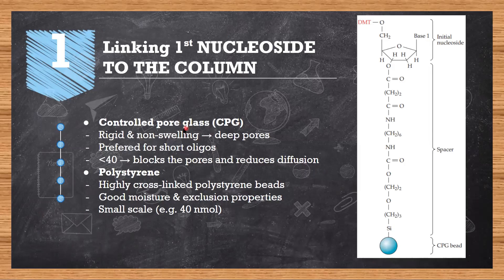These supports are of two types: CPG, controlled pore glass, or polystyrene. Controlled pore glass are rigid, non-swelling beads having pores. Through these pores, all your reagents and nucleotides would be added. It is preferred for oligonucleotides lower than 40 because higher size oligonucleotides would block the pores.